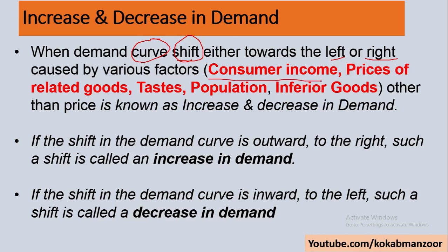That shift is called increase or decrease in demand. Why does it shift? There are a number of factors: consumer income, prices of other related goods, taste, population, and inferior goods. When price changes, expansion and contraction occur, but when price remains the same and consumer income increases or changes, demand can shift. If your income increases, will you buy more?